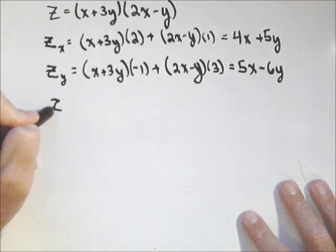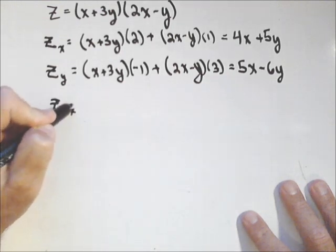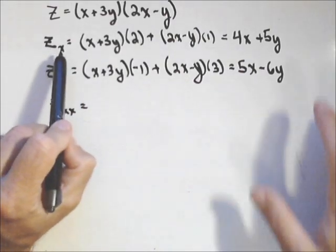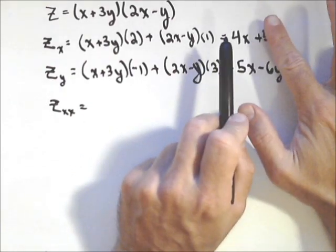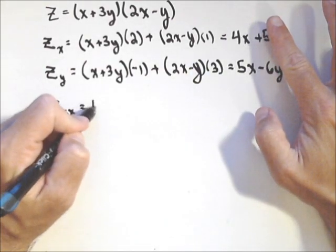You can already see our second-order partials are not going to be too bad. Let's start with z sub xx. So I go to z sub x, which is this one here, first one, and taking the derivative with respect to x, which makes that a constant, it's just 4.